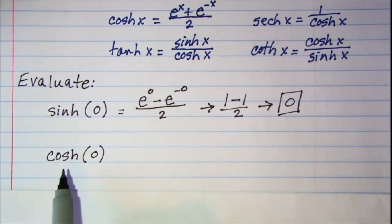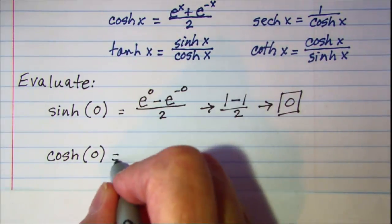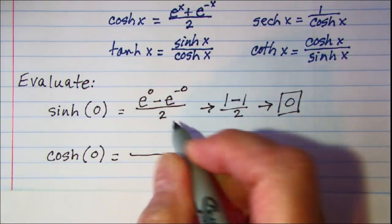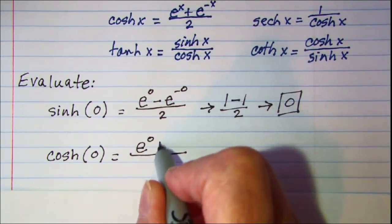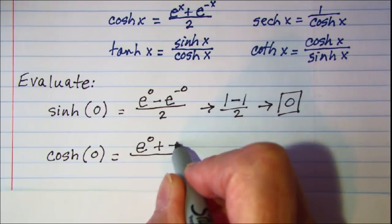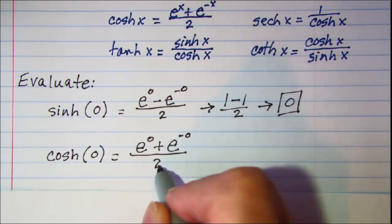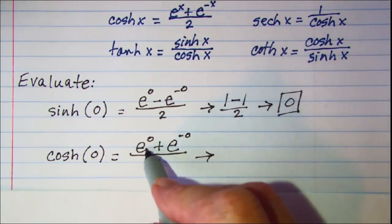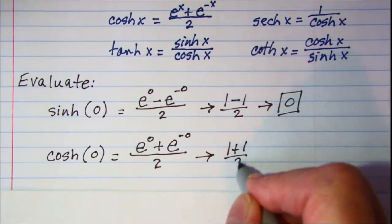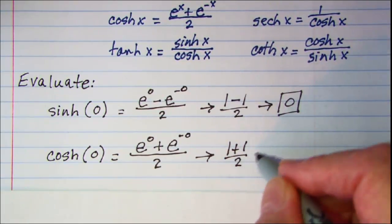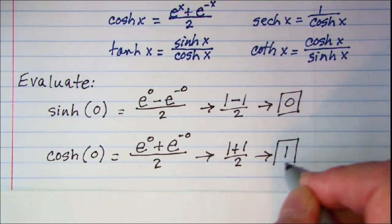Let's evaluate the hyperbolic cosine of zero. By definition, the hyperbolic cosine is e to the x plus e to the negative x, divided by 2. With x equal to zero, this is e to the zero plus e to the negative zero divided by 2, which is 1 plus 1 divided by 2, so the hyperbolic cosine of zero is 1.